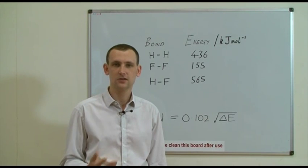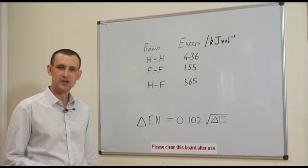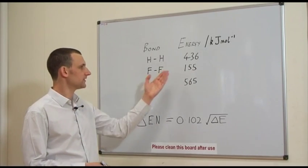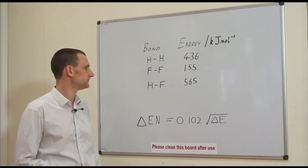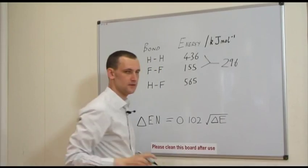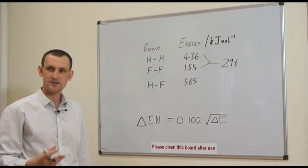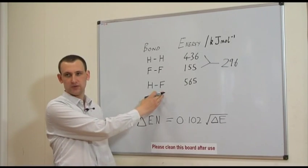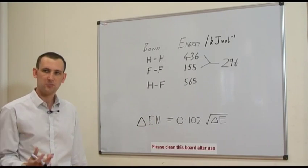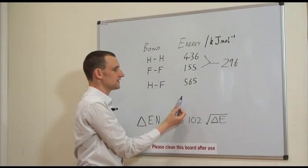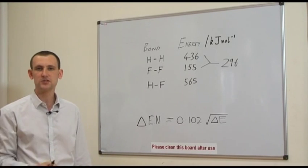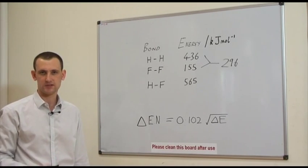He then scaled this using the following formula. The H–H bond has a bond strength of 436 kJ per mole, whereas the F–F bond is only 155 kJ per mole. The average of these two is 296 kJ per mole, which is much less than the HF bond — the heteroatomic bond — at 565 kJ per mole. So Pauling reasoned that this difference between 296, the average of the H–H and the F–F, and the actual HF value of 565, must be due to the ionic contribution caused by the difference in electronegativity.